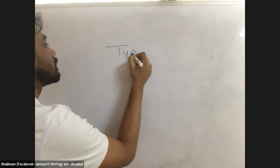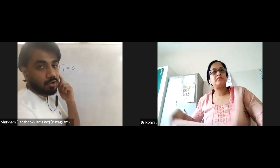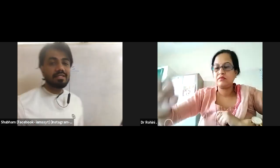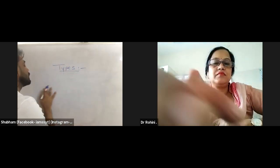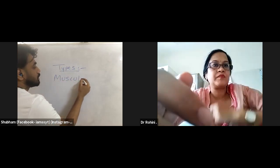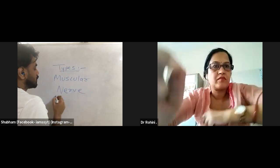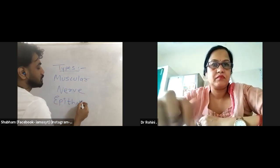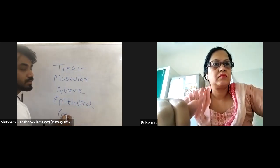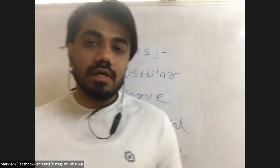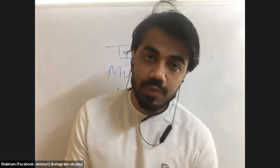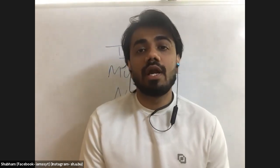Can you define a tissue? What is a tissue in our body and what are its types? Tissues are a group of cells — a group of cells together make a tissue. This group of cells forming a tissue has four major types: muscular tissue, nerve tissue, epithelial tissue, and connective tissue.